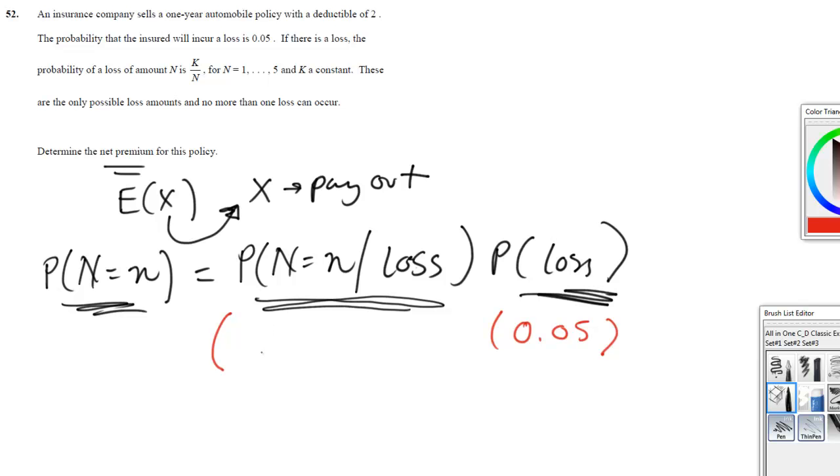We have that the probability of the amount being n given there is a loss is k over n. So it's k over n for n equals 1 all the way to 5. So we have to figure out what k is. So we know that the only possibilities of the amount for a loss is just 1 through 5, no more. So we know that if we were to add 1 over n plus 2 over n, all the way up to 5 over n, this is going to be the entire probability space for that probability, which means that this is going to equal 1.